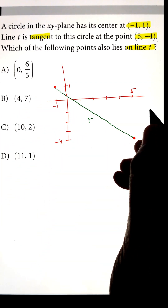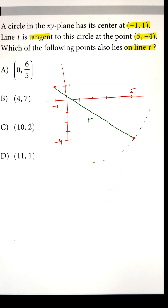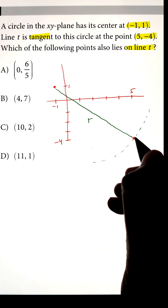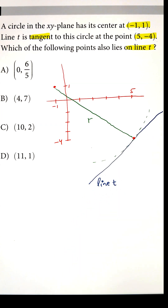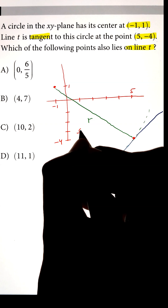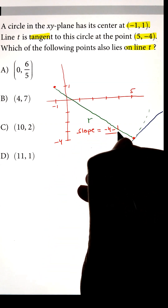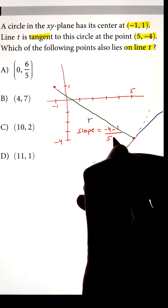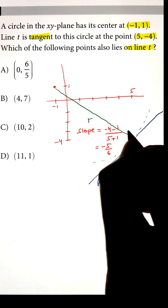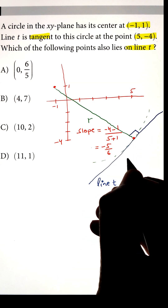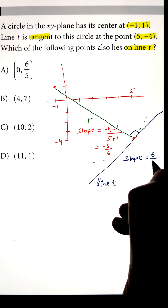Next, we can draw the tangent line t at point (5, -4). The slope of this tangent line can be calculated by first calculating the slope of the radial line, which comes out to negative 5 over 6. Since line t is perpendicular to the radial line, the slope will be the negative reciprocal of it, that is 6 over 5.